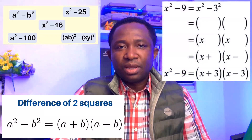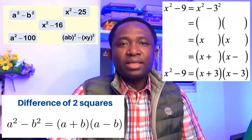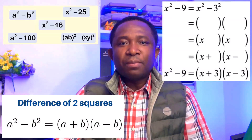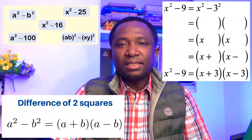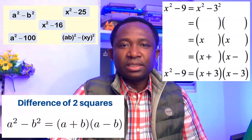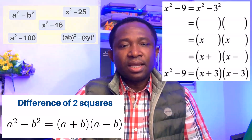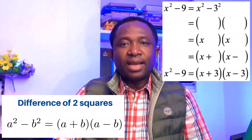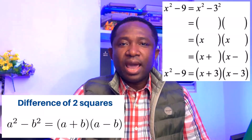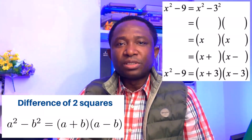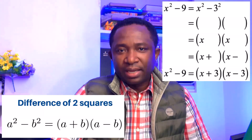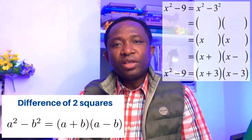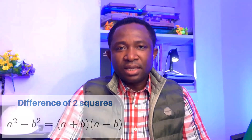For example, x squared minus 9 can be represented as difference of two squares as x squared minus 3 squared. And now we have (x minus 3) in brackets, times (x plus 3) in brackets. With the brackets, it doesn't matter which comes first.